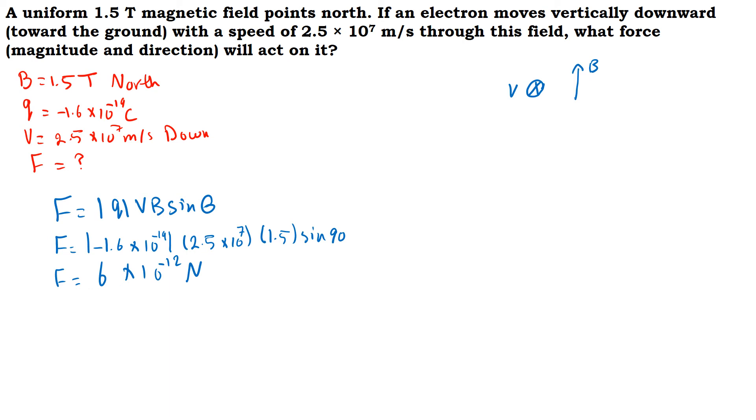Now to find the direction of the magnetic force we will do this: the thumb represents V, so V is going into the plane. The index represents B - B is going north. Then the palm will be out, the palm will be going toward east. So this is the direction of the magnetic force on a positive charge.